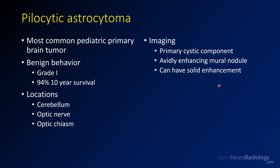On imaging, you tend to have a primary cystic component with an avidly enhancing nodule. You can have areas of solid enhancement, so they can be somewhat variable, but think about that nodule and cystic regions.